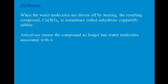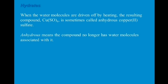Here are some systematic names and common names of familiar inorganic compounds. The chemical formula H2O has the common name water, and the systematic name is dihydrogen monoxide — based on the atoms present: two hydrogen atoms and one oxygen atom, giving 'di' and 'mono'.